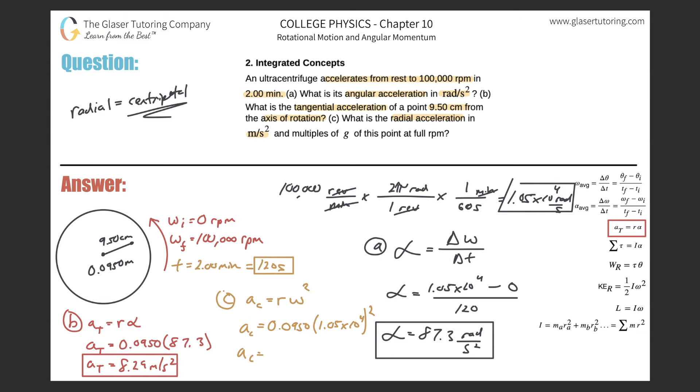So the centripetal acceleration will be - let's just plug that into the calculator now. So we've got 0.095 times - I'll use the exact value from before, which was 10,472. So we get a value in scientific notation of approximately 1.04 times 10 to the seventh. And that is in meters per second squared.